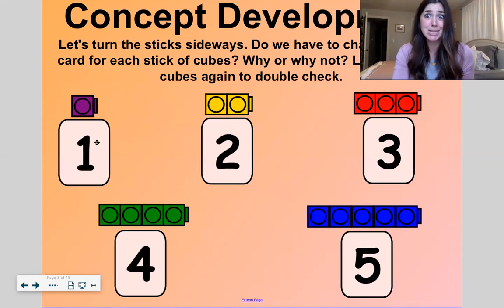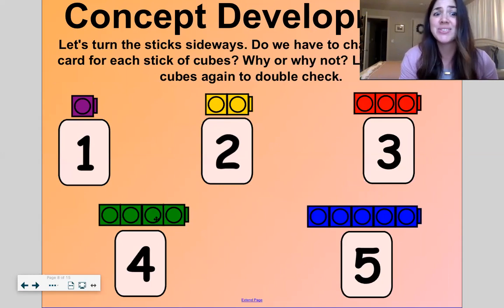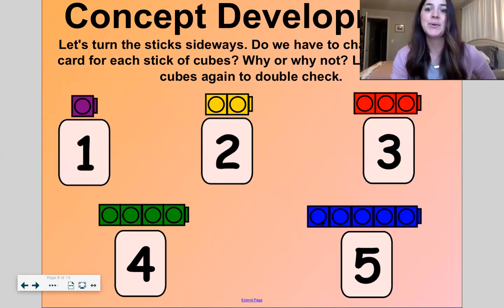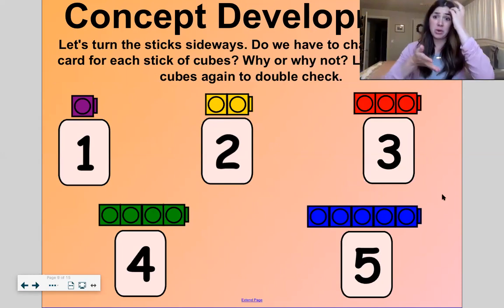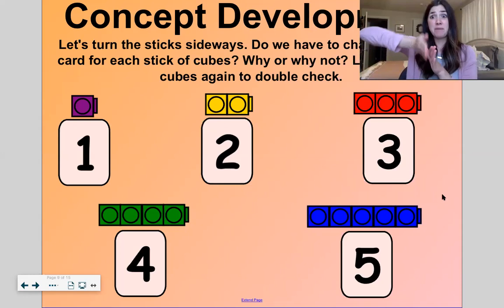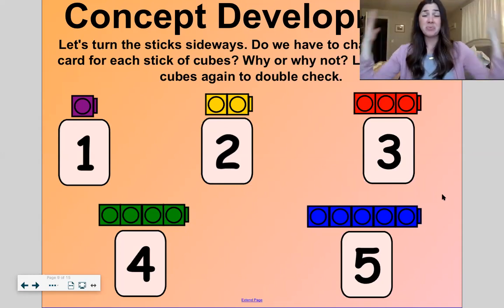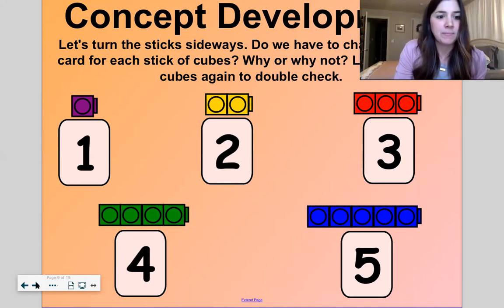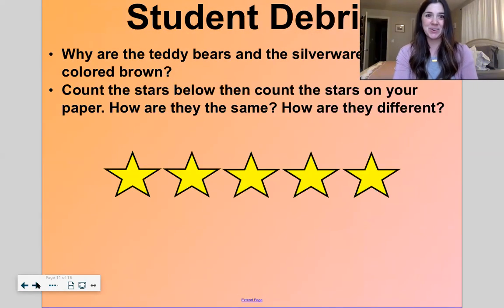One. Still one. One, two. Still two. One, two, three. Still three. One, two, three, four. Still four. One, two, three, four, five. Still five. So turning your group of cubes from the vertical to horizontal didn't change how many there were. We just changed what it looks like, but it didn't change the number of cubes. Good work.